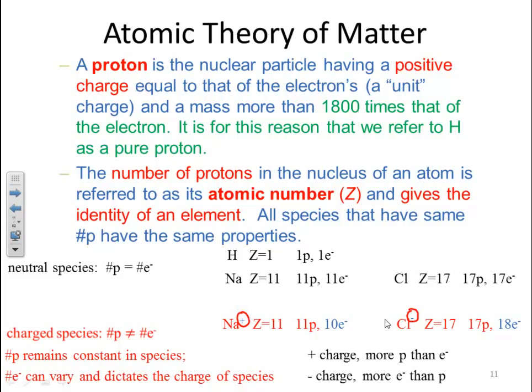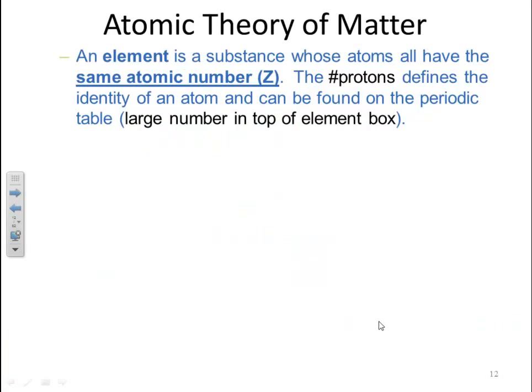A positive charge means more protons than electrons; a negative charge means more electrons than protons. An element is a substance whose atoms all have the same atomic number Z. The number of protons defines the identity of an atom and can be found in the periodic table as the large number at the top of an element's box. For example, hydrogen has atomic number 1, meaning one proton.